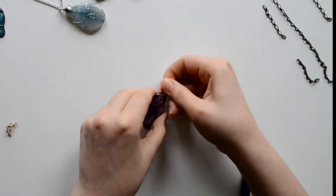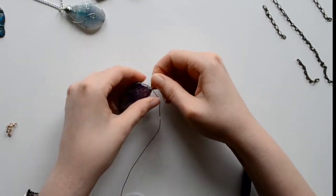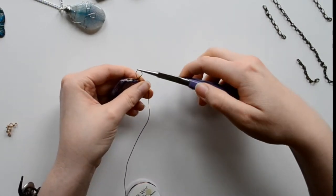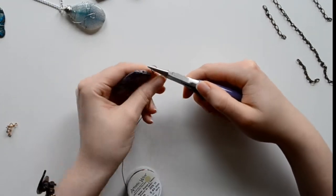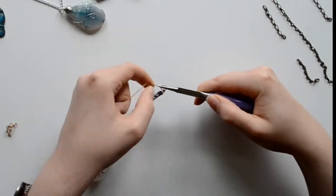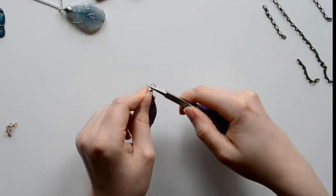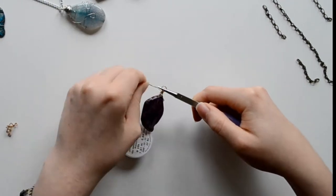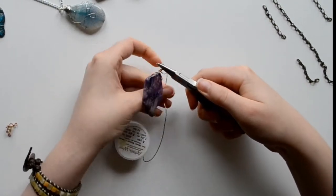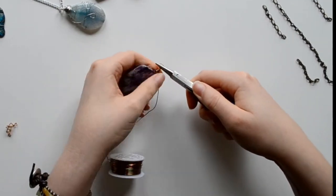Now we're going to form a loop with the long wire. And this is a personal preference. I always hold it with either chain nose pliers or round nose pliers. It helps with the wrapping, at least the initial wrapping.